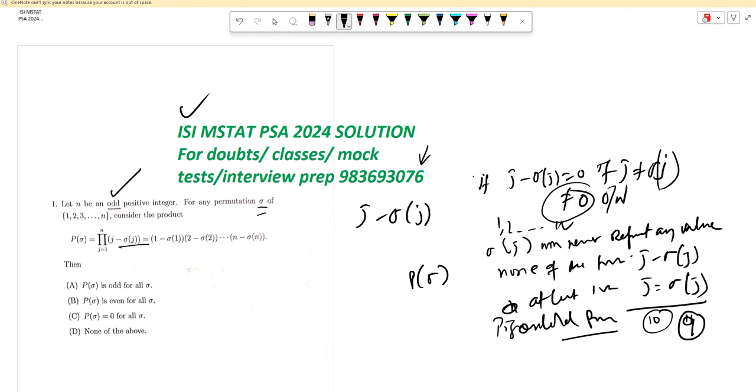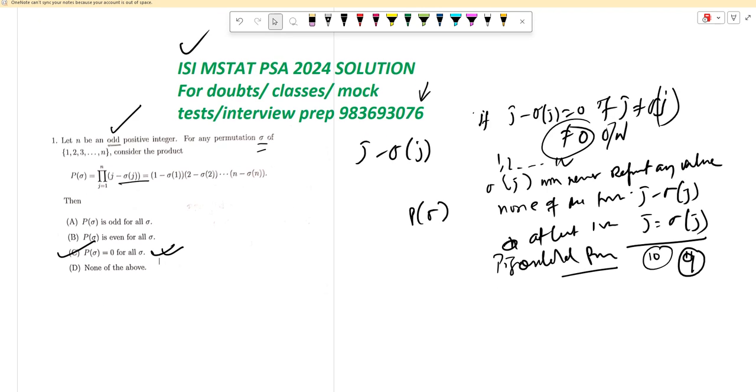Given the permutations of sigma, there will always be at least one value. As a result of that, we are making the entire product P of sigma equal to zero. So the correct answer is C, because at least one zero makes the entire thing zero. So this is the answer to the first question. What do you think?